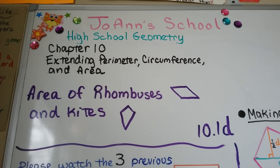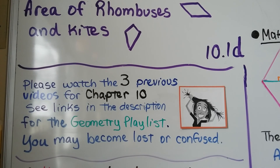The area of rhombuses and kites is covered in section 10.1d, which means we have three previous videos for chapter 10 that are in the description if you need them.